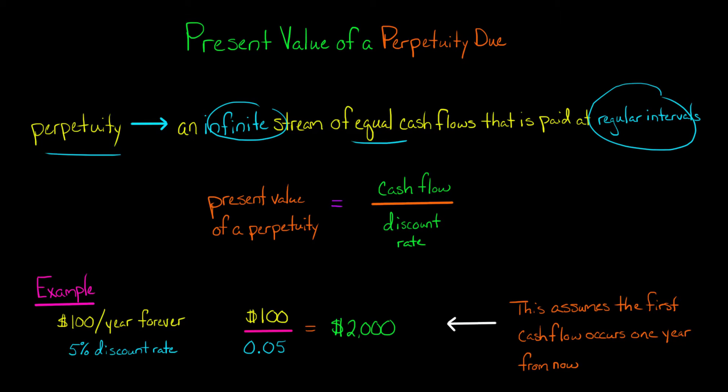For example, if I offered to give you $100 a year forever. Now, you calculate the present value of a regular perpetuity by taking the cash flow, in this case $100, and dividing it by a discount rate.